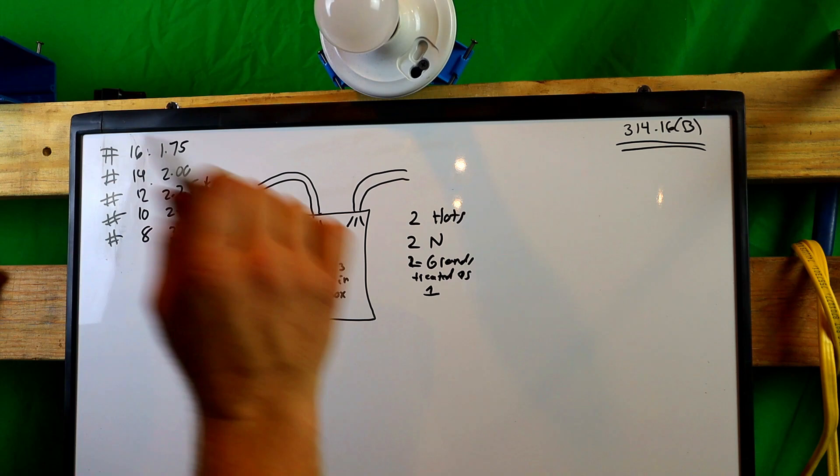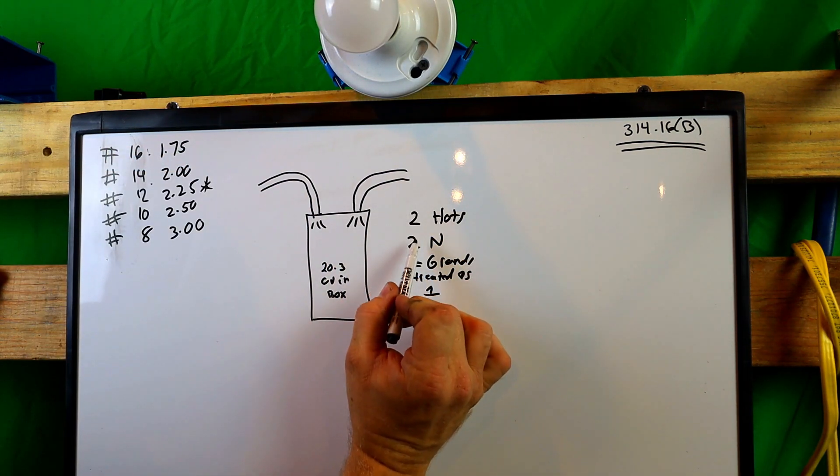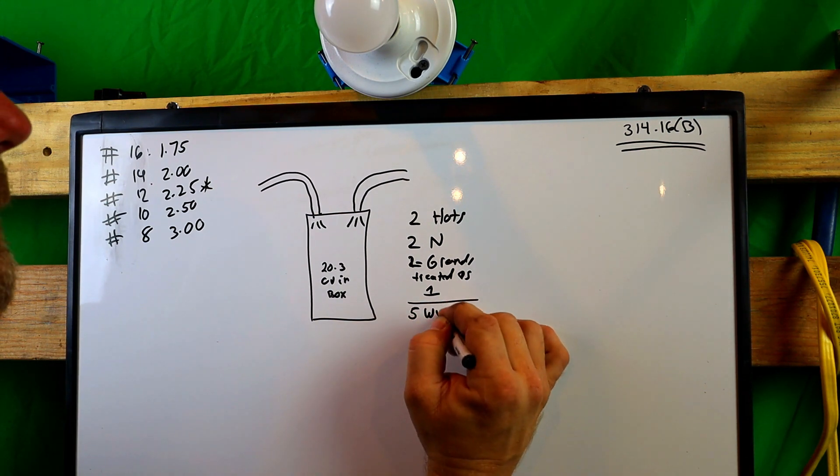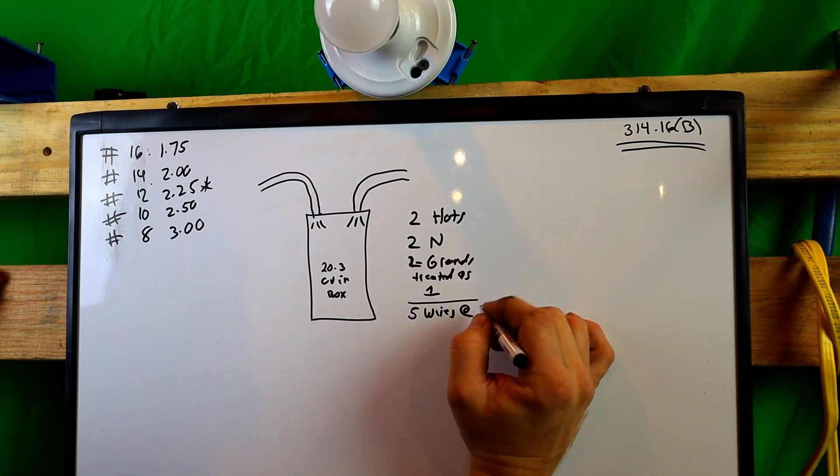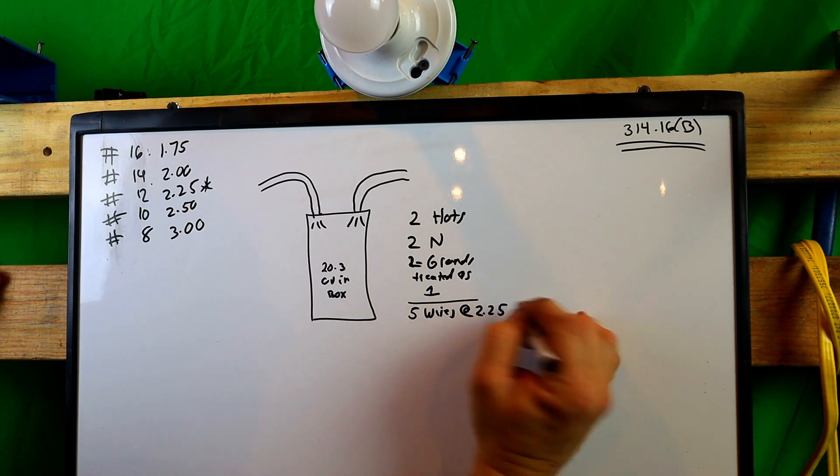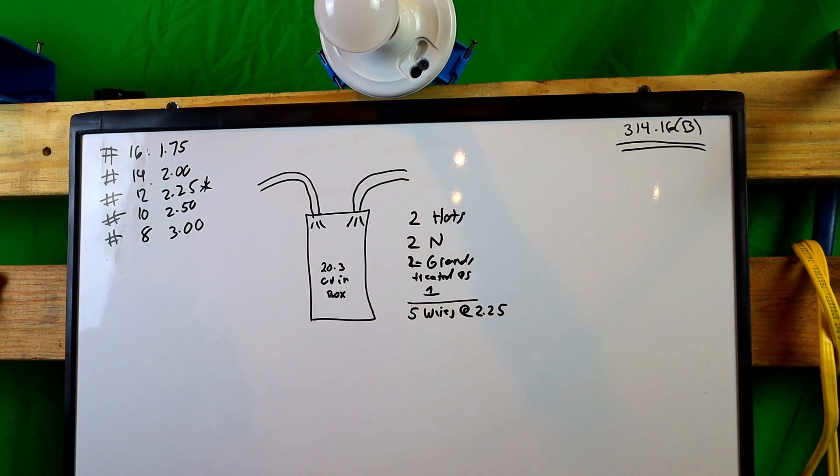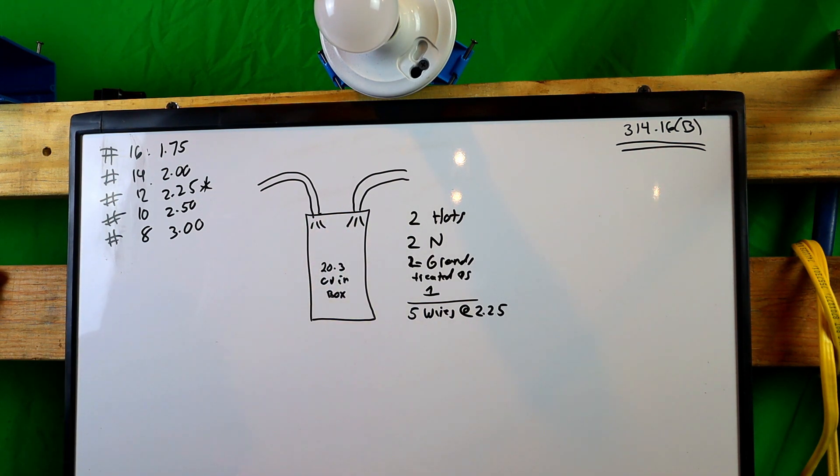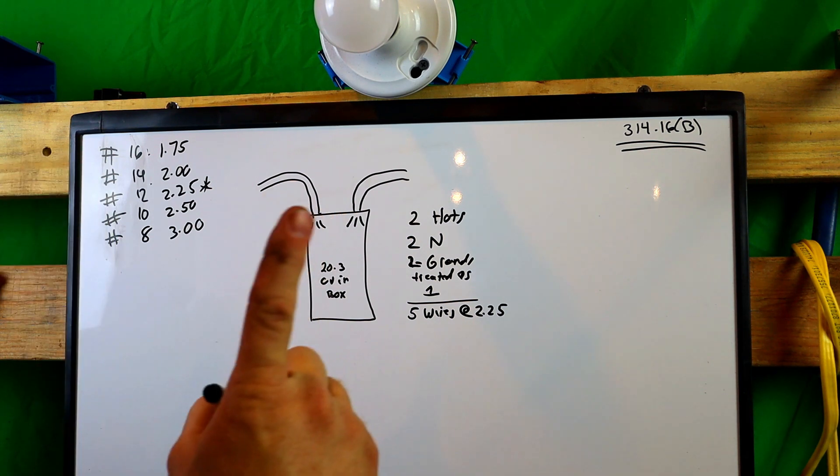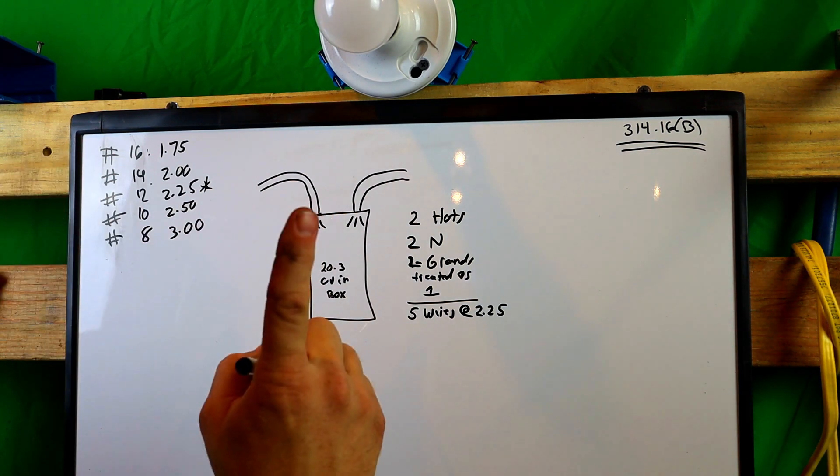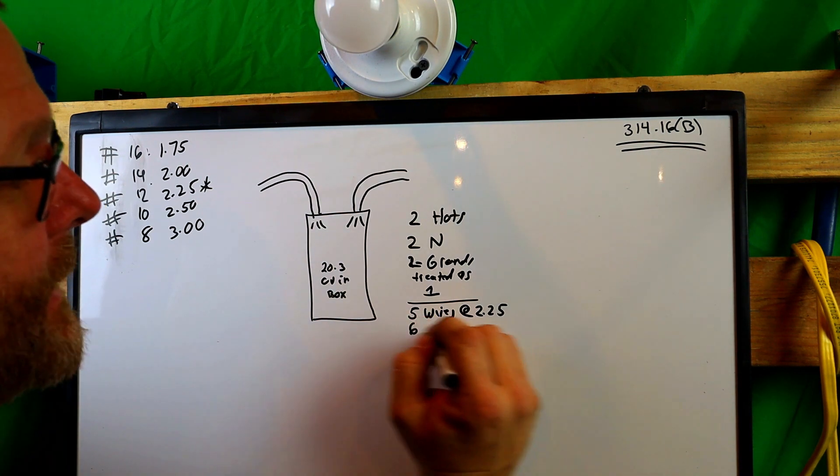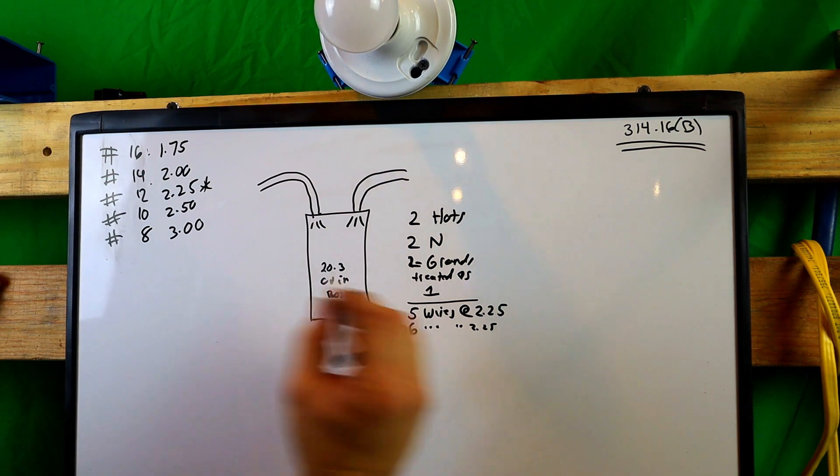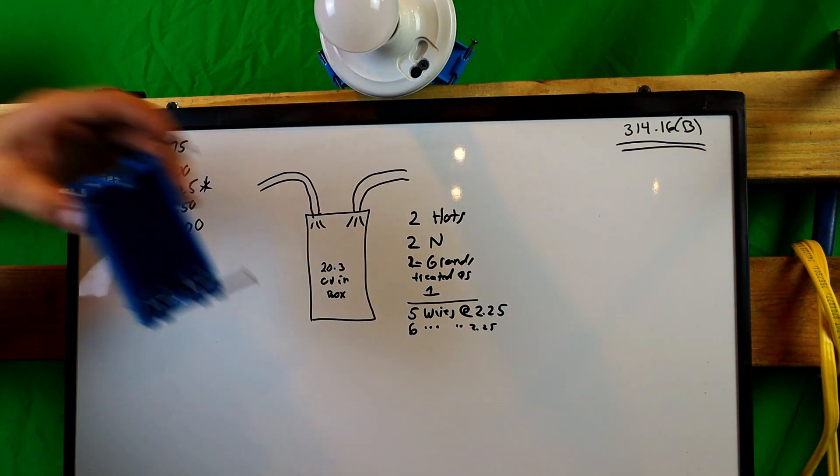Does that make sense? This is in the code book. You can read this straight out of the code book. So we technically have five wires. So we have five wires at 2.25. Now, what else do we have to count in this box? Well, we know that there's internal clamps in here. So we have to count that as one wire size. So there's now six wires at 2.25. And we're going to put one receptacle in here because that's what we're going to use. So let's talk about receptacles.